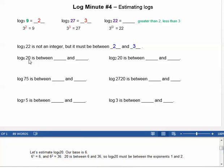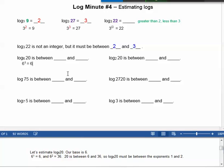Let's estimate log base 6 of 20. Our base is 6. Let's find powers of 6. 6 to the first power is 6, and 6 to the second power is 36, and 20 is between 6 and 36. So log base 6 of 20 must be between the exponents 1 and 2.